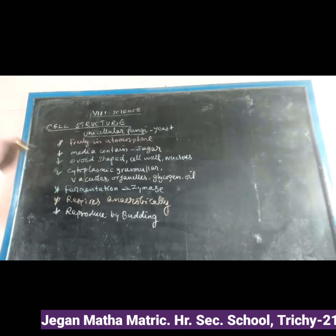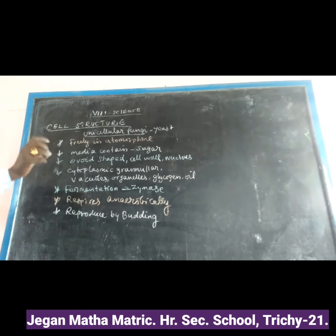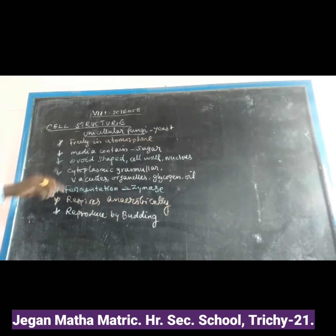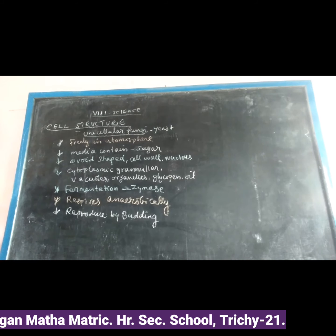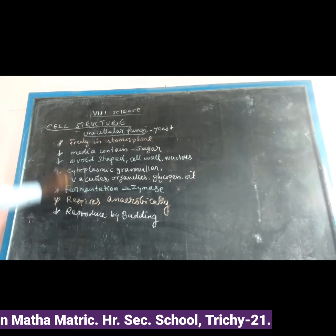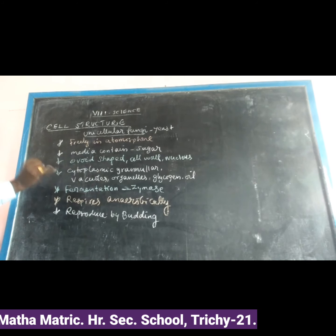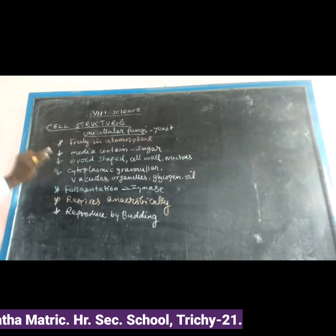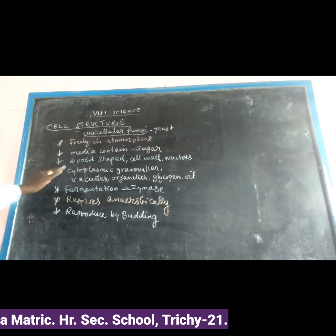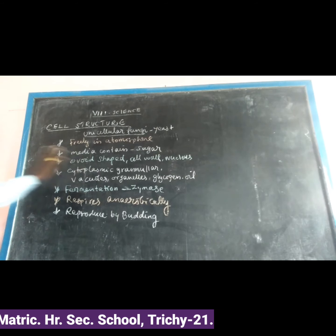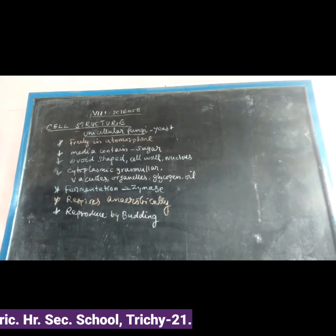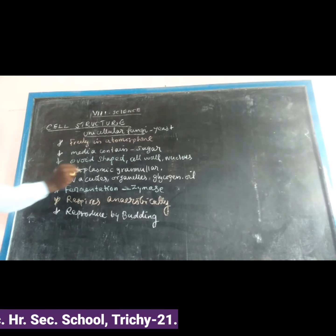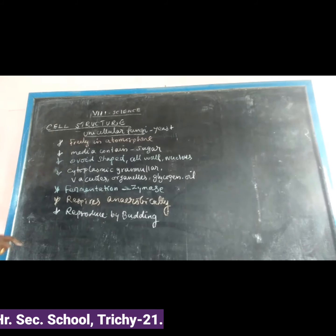Cytoplasmic granules are present in yeast. Various cytoplasmic organelles are present including mitochondria, endoplasmic reticulum, and other organelles. A reserve food material called glycogen is stored, and oil droplets are also present in the cytoplasm.